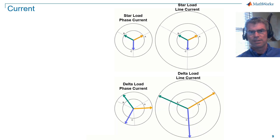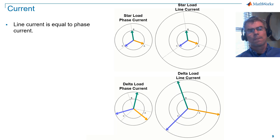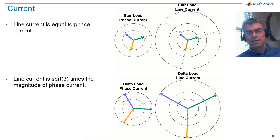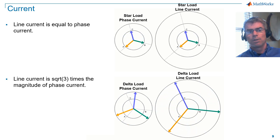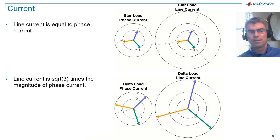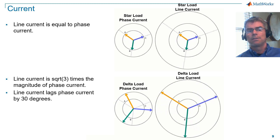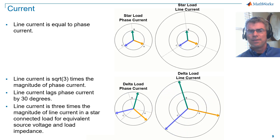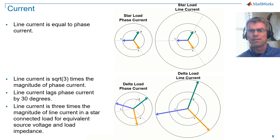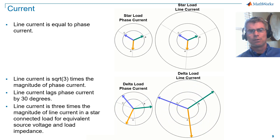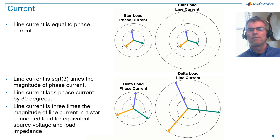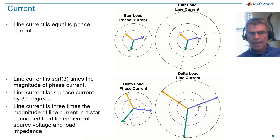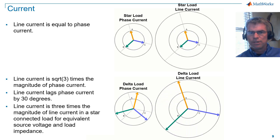For this example, the loads consist of 1 ohm resistances for both the star and delta connected loads. For a star connected load, line current is equal to phase current. For a delta connected load, line current is square root of 3 times the magnitude of phase current, and line current lags phase current by 30 degrees. Also notice that line current for a delta connected load is 3 times the magnitude of line current for a star connected load when we have equivalent source voltage and load impedance. This means that the power delivered to a delta connected load will be 3 times the power delivered to a star connected load, given equivalent source voltage and load impedance.